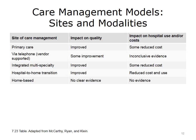When primary care is integrated with multi-specialty care and care management is included—for example, having health educators in clinics—we find improved quality of care and some reduced costs and hospitalization. When models include hospital-to-home transition with care managers deployed, we often find improved quality and reduced cost and utilization. As for care management programs delivered in the home, there is no clear evidence that those programs improve quality or impact hospital use, cost, or utilization.